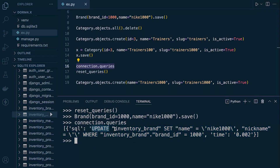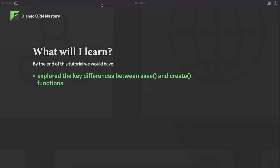Hopefully what's come across in this tutorial is that there is a big difference between save and the create method. The save method will update data in the database if the supplied data includes a primary key matching an existing entry. Viewing the SQL behind the scenes helps illustrate the key differences between save and create.